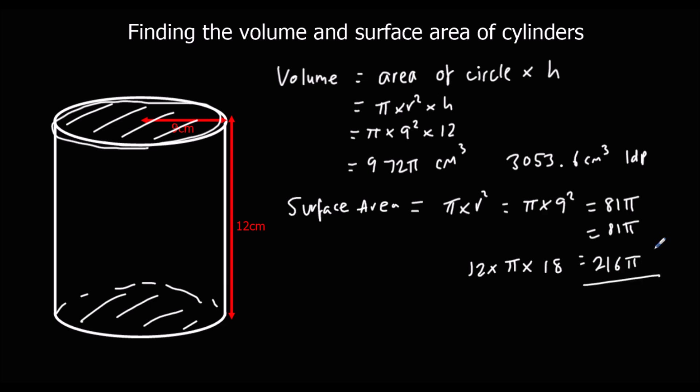So in total we've got 81 pi, 81 pi and 216 pi. So we've got 378 pi centimeter squared, or as a decimal that's 1187.5 cm squared.